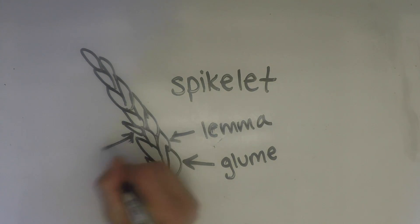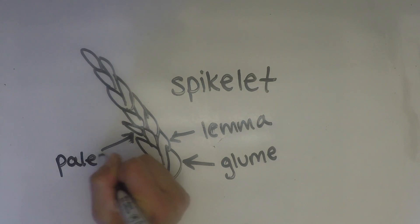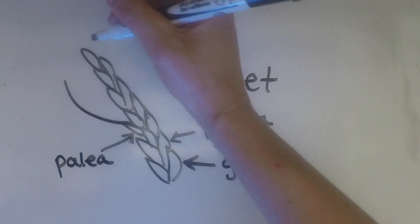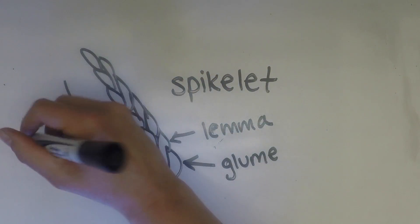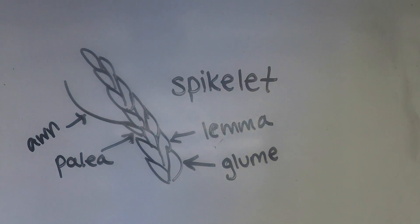In the space between the stem and the lemma is the palea, which encloses the reproductive structure. In addition, sometimes slender extensions called awns come out from the spikelets.